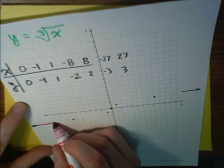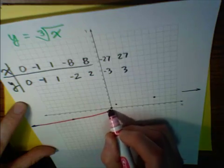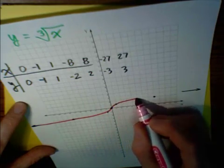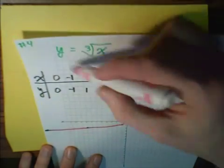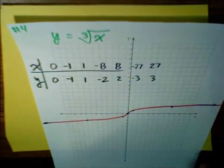And again, these are just sketches, sketches of these parent graphs, because they're not mathematically precise. So the sketch of the graph y equals cube root of x looks like this.